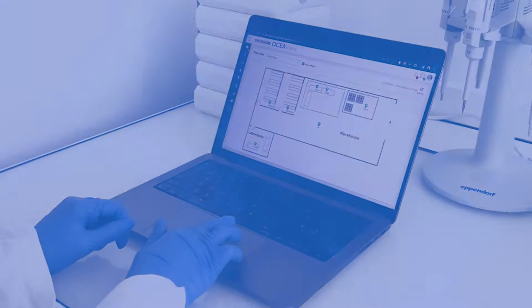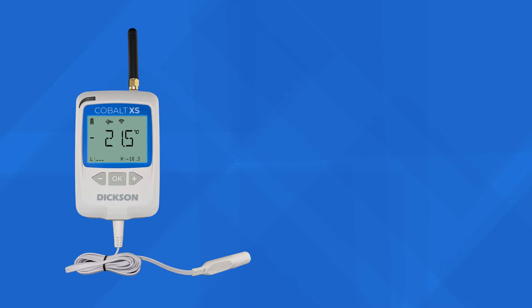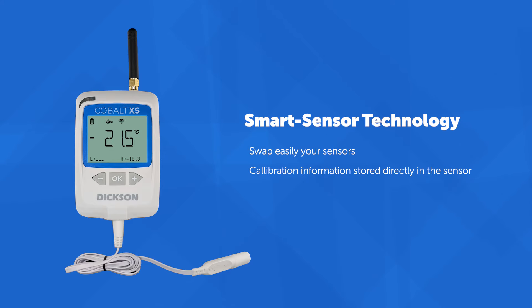Utilizing Dixon Smart Sensor Technology, the Cobalt XS allows for on-the-fly swapping by storing calibration information directly in the sensor, ensuring convenient operation and high accuracy.